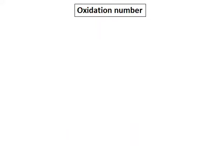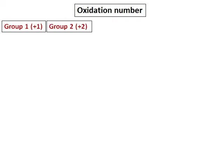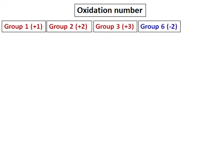Let us start with oxidation number. What is the oxidation number? Basically, it is the charge on an ion. For group 1 elements, the charge on an ion is positive 1 and the oxidation number is positive 1. Group 2, it is positive 2, and group 3, it is positive 3. We will leave out groups 4 and 5 and go on to group 6, that is negative 2, and group 7, it is negative 1. You are supposed to remember all these charges.